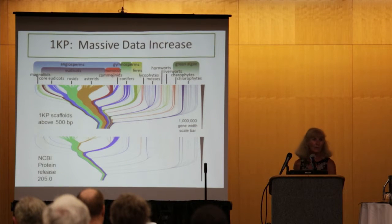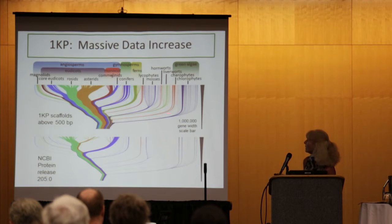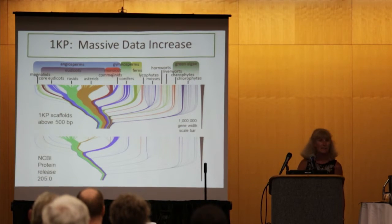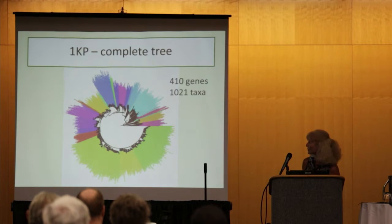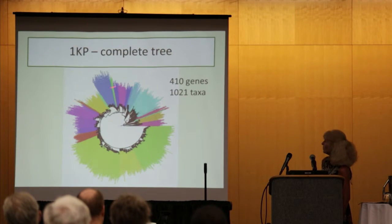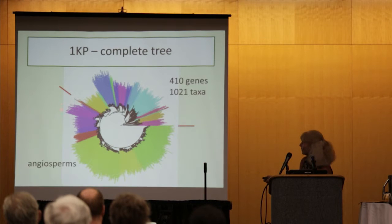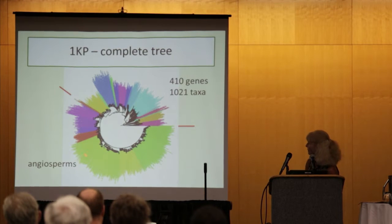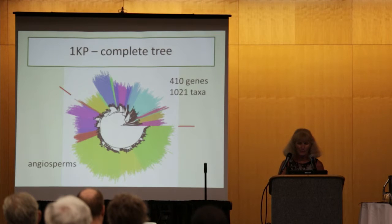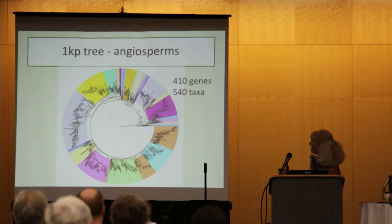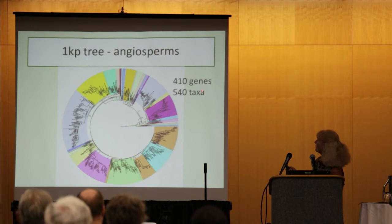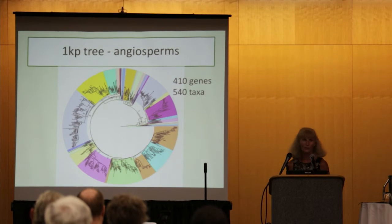The 1KP data are contributing a huge amount of new data to the green plant clade, and these new sequence data will be very useful in helping us resolve many of these problems. Here's the 1KP complete tree based on 410 genes and 1021 taxa. The angiosperms represent over half of all of the species. The results I'll be describing come from 410 genes for about 540 taxa, based on a supermatrix analysis that includes only the first and second codon positions.